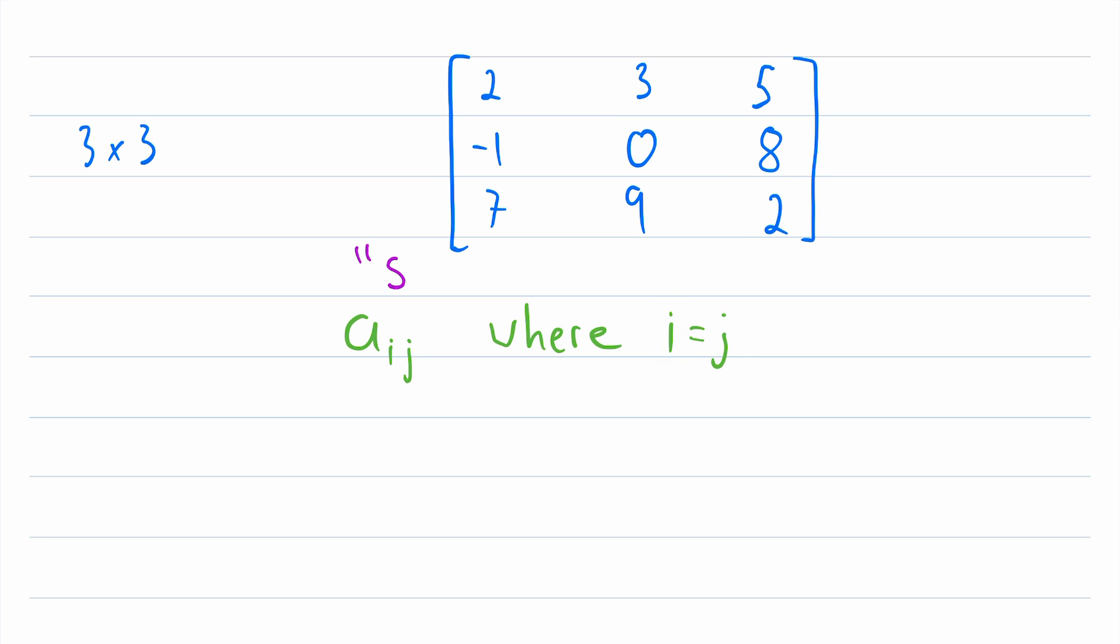This is most intuitive for what are called square matrices. A square matrix is a matrix that has the same number of rows and columns, just like this matrix here, with three rows and three columns.